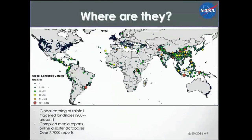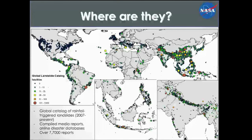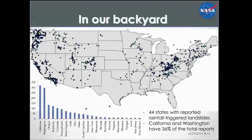Where are we observing these events? We've been developing a catalog since 2007, based primarily on media reports, to understand where and when rainfall-triggered landslides are happening. We now have over 7,000 — almost 8,000 — landslide reports in our system. Looking at the map, you can see landslide hotspots; the size of each point indicates number of fatalities. There are clearly hotspots along the Himalayan Arc, along the Pacific Rim in the Philippines — areas with extreme topography, extreme precipitation, and often active tectonics.